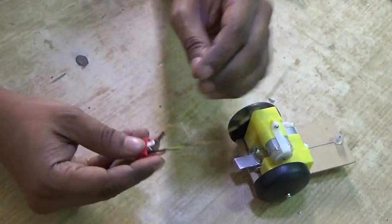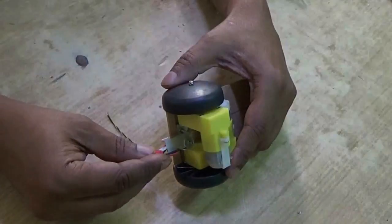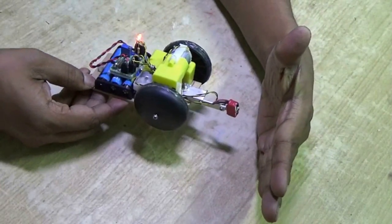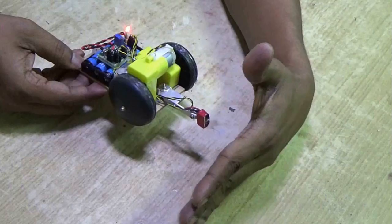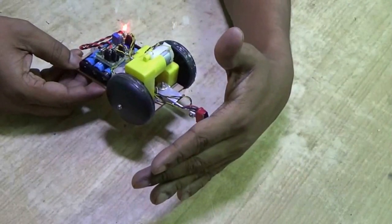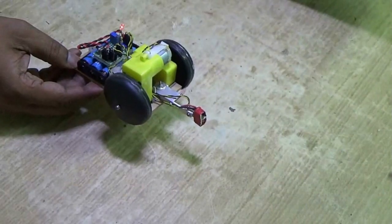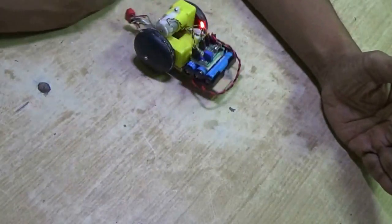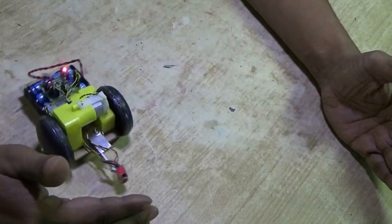Now I'm going to fit it in front of this clamp using some plastic. Now see, if I bring my hand in front, one wheel is rotating, another is not. The moment I move it out, both are rotating. Now what happens if I keep it on the floor? It is moving forward. The moment it gets a reflection from the obstacle, it will take a turn.